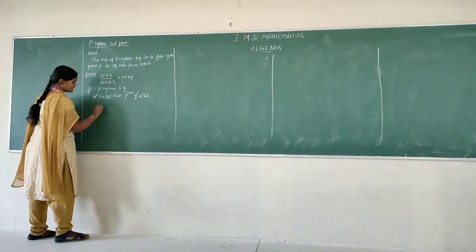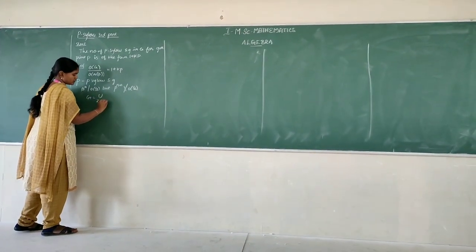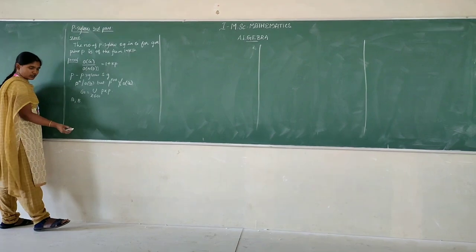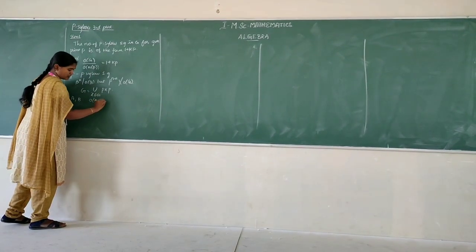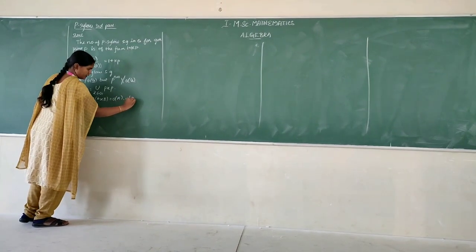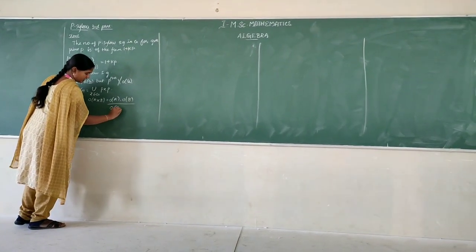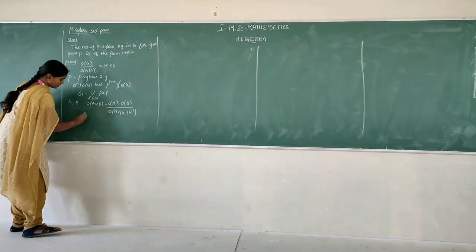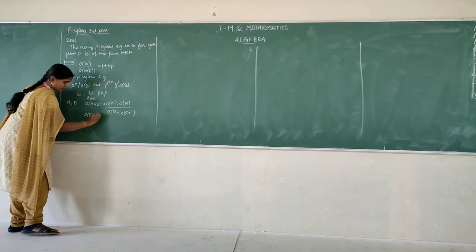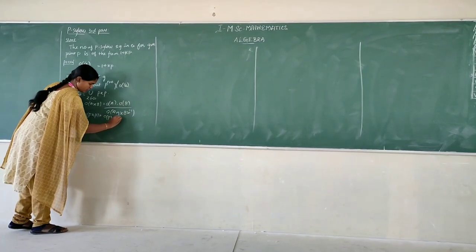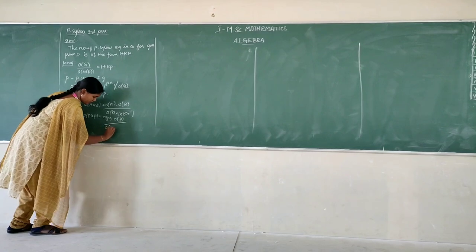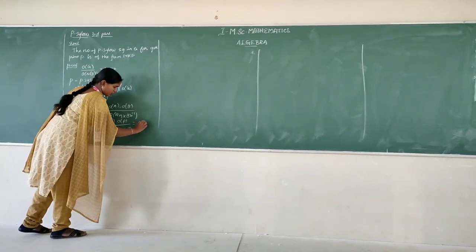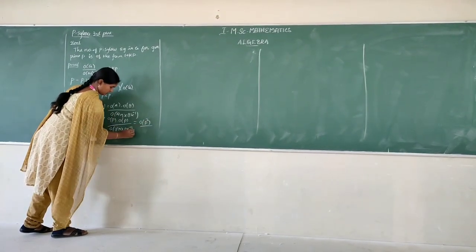We want to decompose G into double cosets: G equals the union of double cosets PxP for x belonging to G. Using the formula for two subgroups A and D, the order of AxD equals the order of A times the order of D divided by the order of A intersection xDx inverse. Replacing A by P, this becomes the order of P squared divided by the order of P intersection xPx inverse.